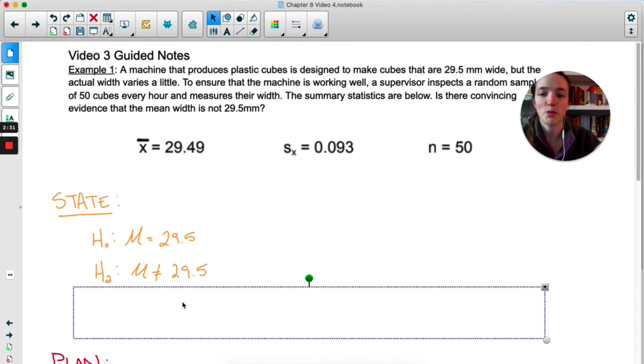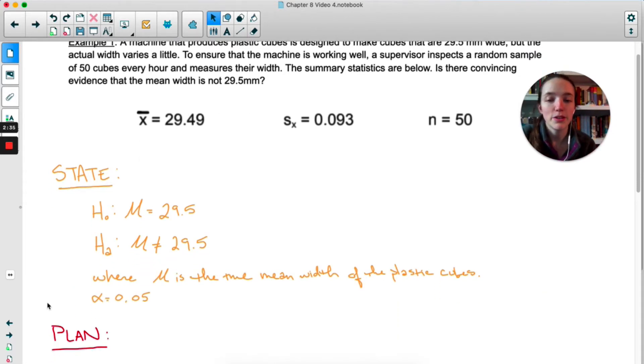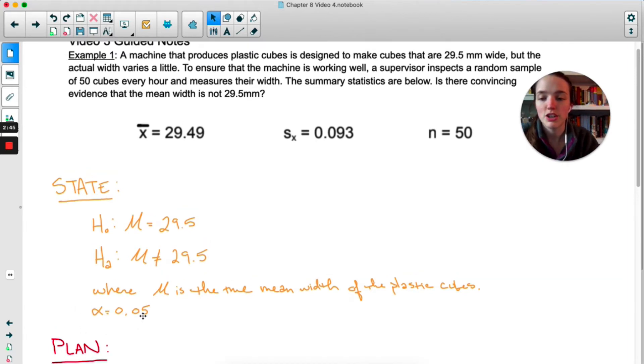Just like with proportions, I want you to say what that mu represents. So where mu is the true mean width of the plastic cubes. If you don't include that sentence, I don't know what you're talking about when you just say mu equals something. And like always, we're going to choose our significance level before we start. Let's just do 0.05 because they didn't specify, so we'll just do a standard significance level.